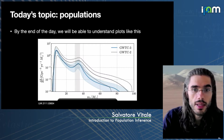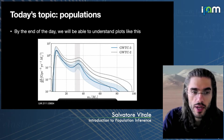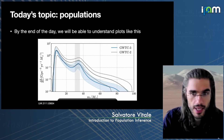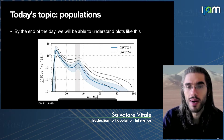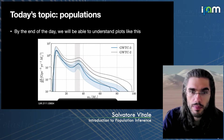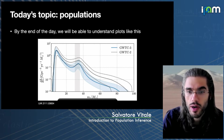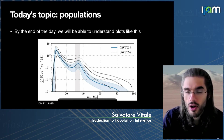By the end of today's talks and discussion, we should be able to understand plots like this one from the latest LIGO Virgo population paper released a few days ago. In this plot, we are showing on the x-axis the mass of the primary — the most massive object in the binary in solar masses — and on the y-axis the merger rate per unit mass. This shows that there is rather clear evidence for a peak at around 35 solar masses, and a few other features which may be slightly less solid. Today we're going to talk end-to-end about how you would produce and interpret a plot like this.